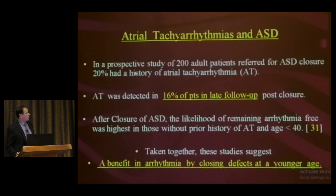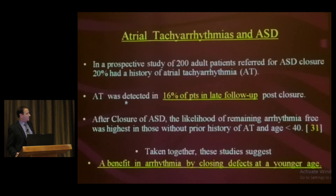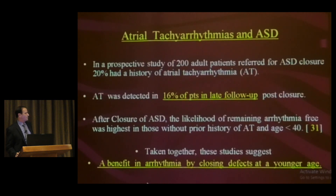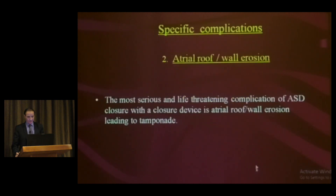The above data suggests that transcatheter closure is likely more protective against the development of atrial arrhythmias than surgical closure, presumably due to pericardiotomy and atrial scarring with surgery. A prospective study of 200 patients referred for ASD closure found 20% had atrial tachyarrhythmia at presentation, with 16% detected at late follow-up. The key message is that closing defects at a younger age confers benefit in reducing arrhythmias.